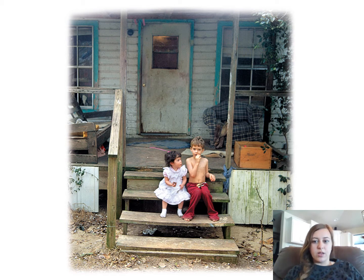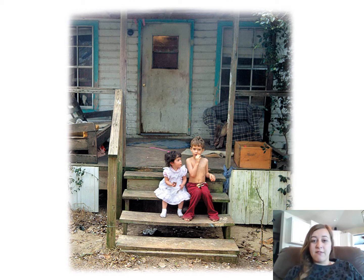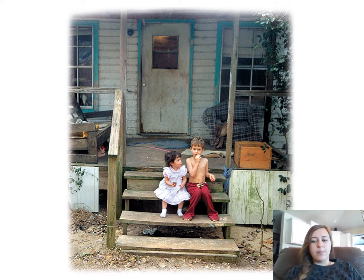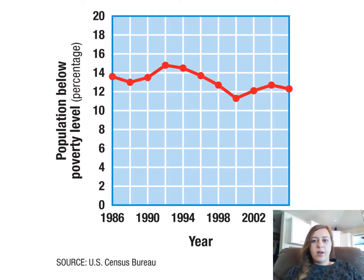Some examples using 2016 poverty thresholds: just under $13,000 for a single individual under age 65; $14,500 for a household of two people age 65 or younger with no children; just over $24,000 for a family of four with two children under 18. Those numbers have increased a little since then, but not by a lot. The poverty rate is the percentage of households living below those thresholds.